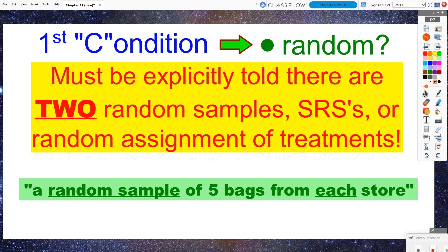For our conditions. Condition number one, the random condition. We have to have two. A lot of people leave this out. They forget the fact that they really need to be stating that this is true for both samples, not just for one sample. You would have to state that both samples are random. Or there were random samples, plural. For our Walmart versus Target problem, it did state a random sample of five bags from each store. Saying that it's from each store is implying that there's more than one store.